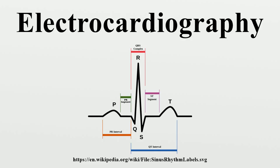The heart's electrical axis is the general direction of the ventricular depolarization wave front in the sagittal plane. The QRS axis can be determined by looking for the limb lead or augmented limb lead with the greatest positive amplitude of its R wave. A lead can only detect changes in voltage that are aligned with that lead.